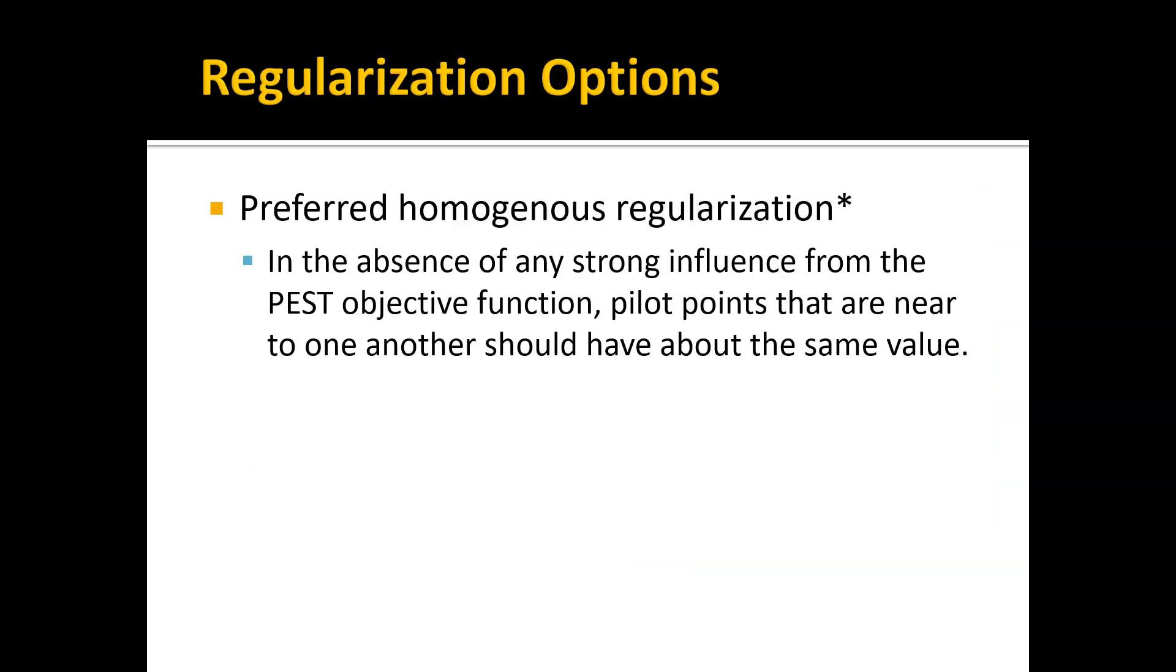Regularization allows us to cheat and actually use more parameters than observations by adding a form of stiffness. One way is called preferred homogeneous regularization. This basically means that in the absence of any strong influence from the PEST objective function, pilot points that are near one another should have about the same value. When it's moving the pilot point values up and down based on feedback from the model, if you don't have observation wells near your pilot point, there's nothing to guide that. In this case, it just makes it equal to whatever the other pilot point values are nearby.